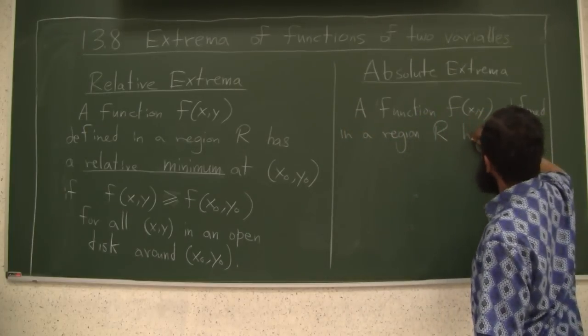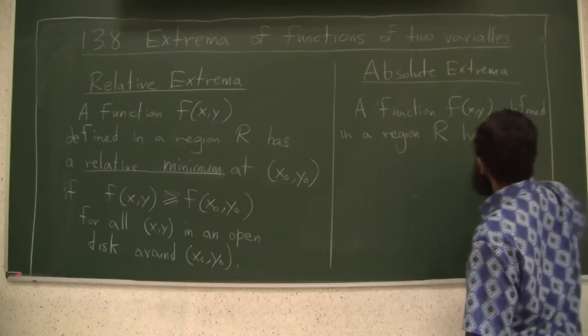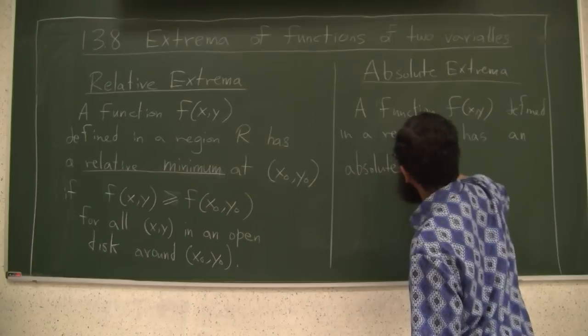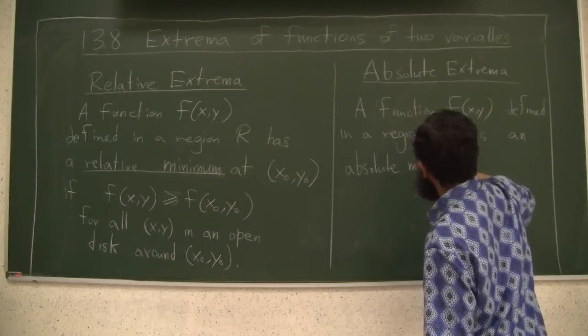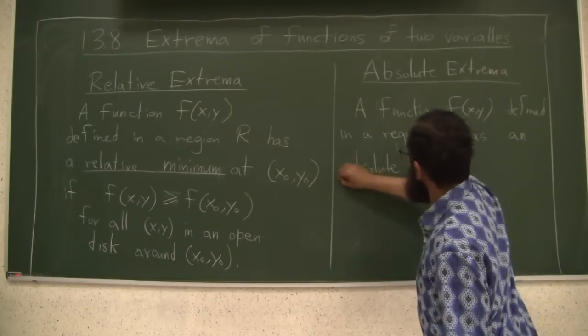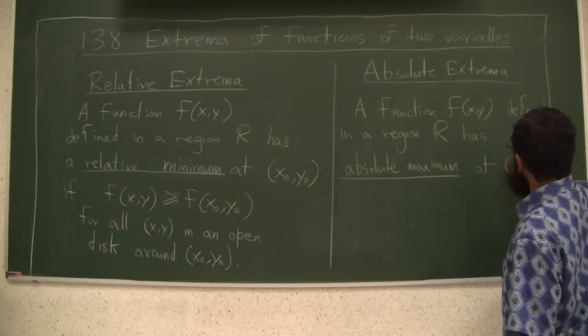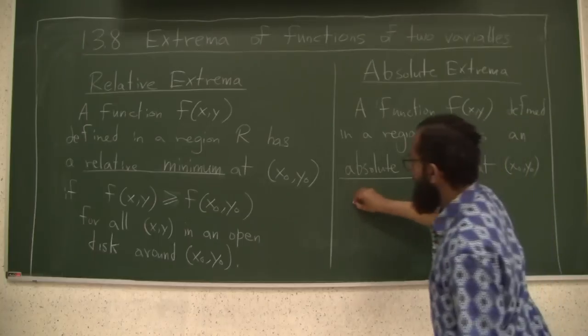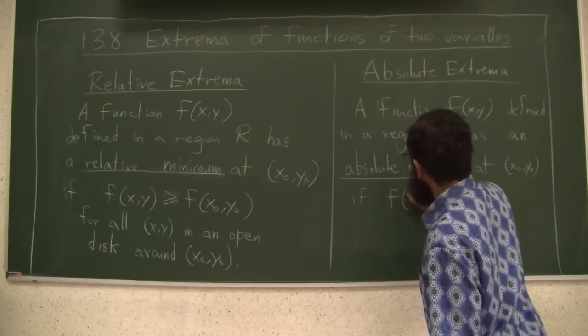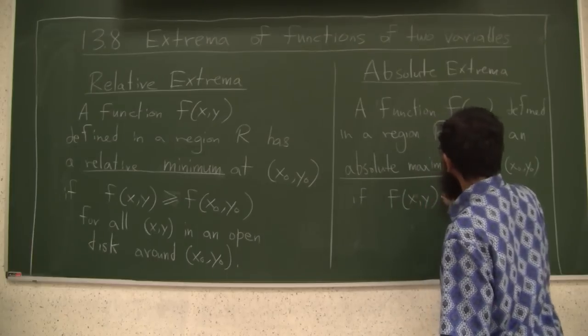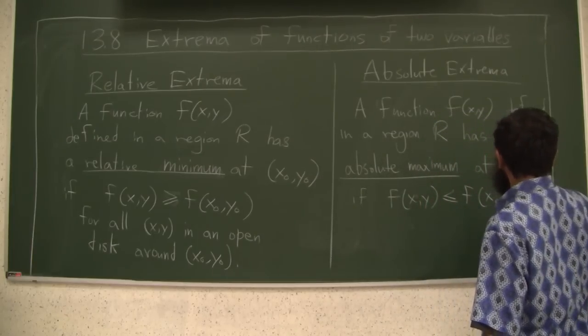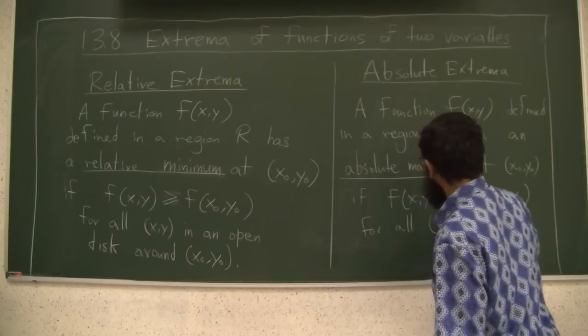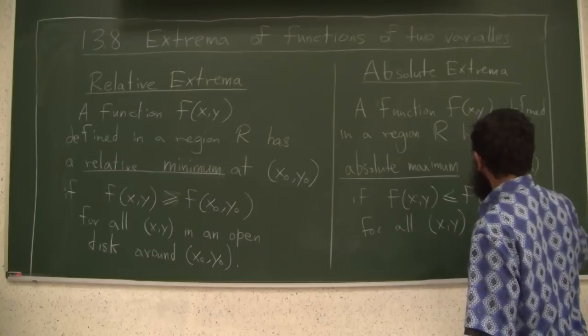Has an absolute maximum at x0, y0 if f of x, y is less than or equal to f of x0, y0 for all x, y in the region R.